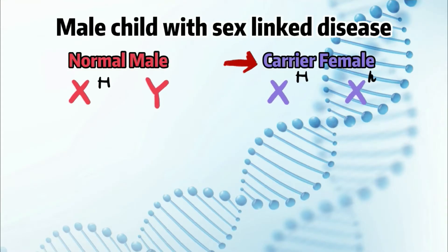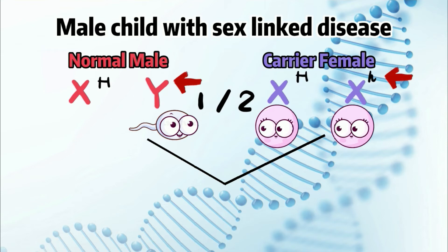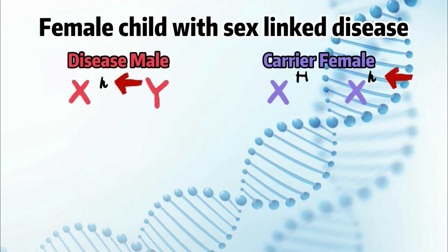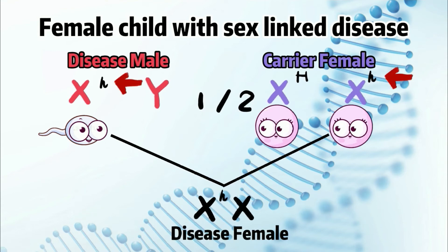Due to the fact that only the X chromosome carries sex-linked genes, males actually have a higher chance of inheriting sex-linked disease. For example, all it takes is for the mother to be a carrier female — the sperm carrying the Y chromosome will have a 1 out of 2 chance to fertilize the ovum with the recessive allele, producing a male child with the disease. For females, both parents need to carry the recessive allele, which occurs very rarely.